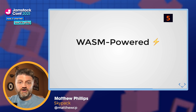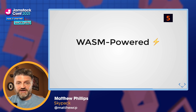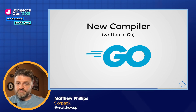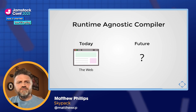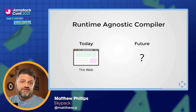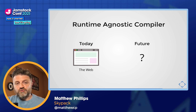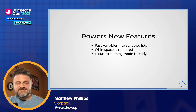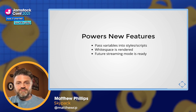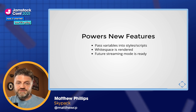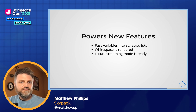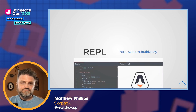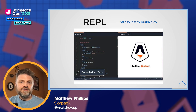The fifth thing that makes Astro amazing is that we're now WASM-powered in Astro 0.21. Our new compiler compiles down to an efficient bytecode format that makes compilation much faster. The new compiler is written in Go, making us runtime agnostic — the compiler can run in the browser, and in the future in any environment that supports WASM. This also powers new features: the ability to pass variables into styles and script tags, correct whitespace rendering, and we're now set up for streaming, which will enable SSR support and HTML streaming to the browser. You can try the new compiler at astro.build/play.